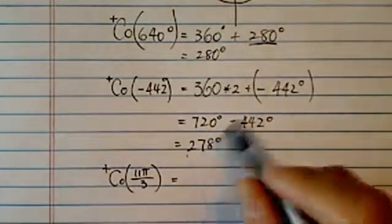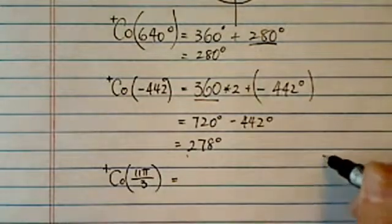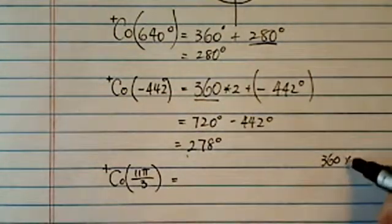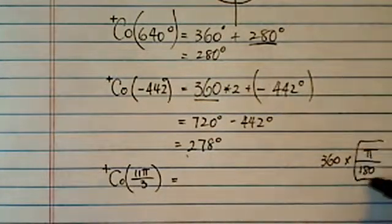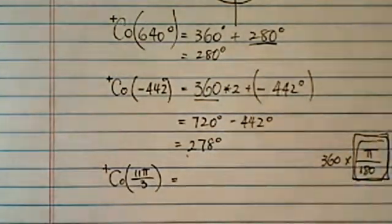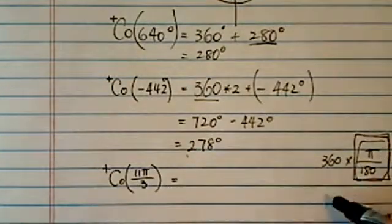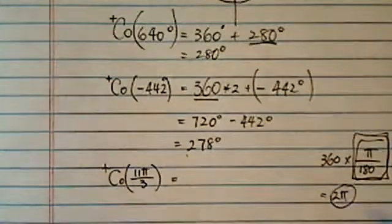So here, what we're going to do is we're still going to look for that 360. Now, 360 does have to be converted into pi. The exchange ratio is 180 degrees equal to 1 pi. So 360 is equal to 2 pi.